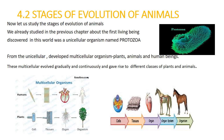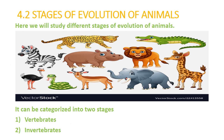Now let us study the stages of evolution of animals. We already studied in the previous chapter that the first living being discovered was a unicellular organism named protozoa. From unicellular organisms developed multicellular organisms like plants, animals, and human beings. These multicellular organisms evolved gradually and continuously, giving rise to different classes of plants and animals. The stages of evolution of animals can be categorized into two: vertebrates and invertebrates.